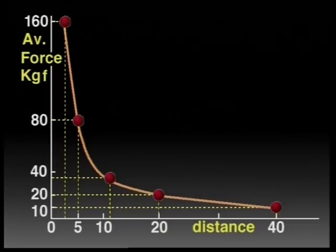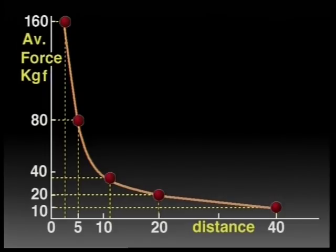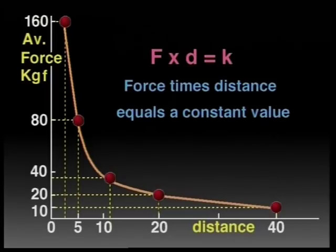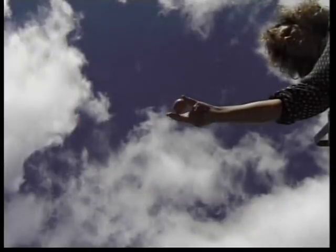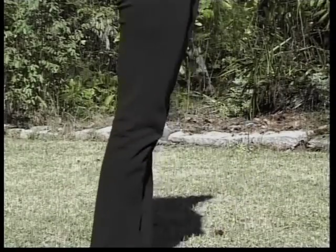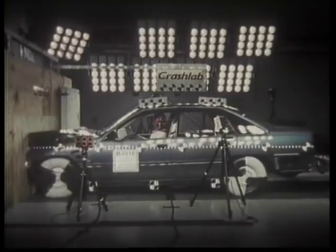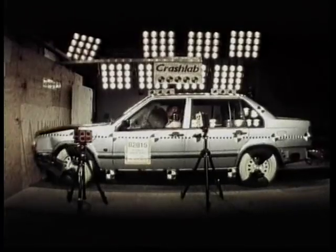This graph tells us that force and distance are inversely proportional to each other. This means simply that as stopping distance becomes shorter, the force becomes greater. Scientists represent this as: force times distance equals a constant value. So, what's the link between this formula and the examples we saw earlier? How does this formula help us to understand what happens in a real car crash?